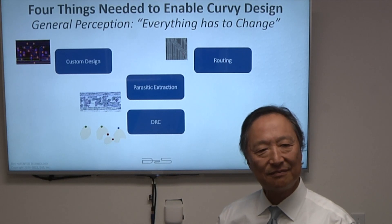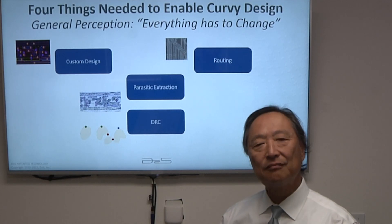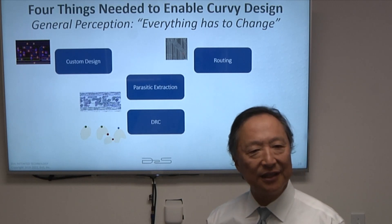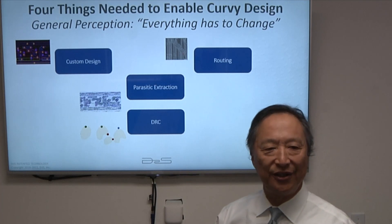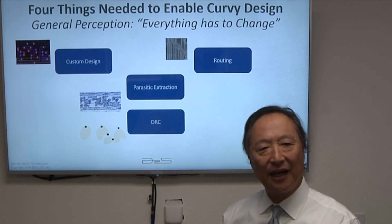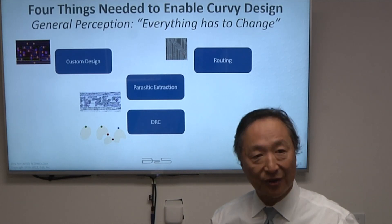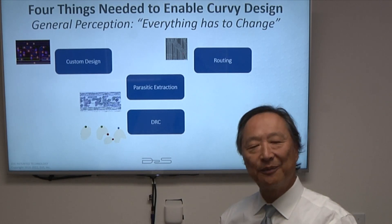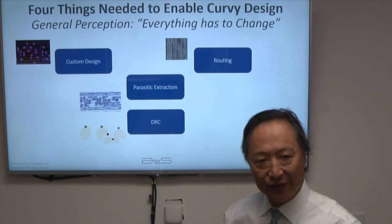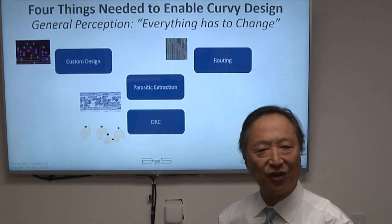Does AI fit in here as well — can you use machine learning to pull all these things together at a level you couldn't with existing tools? AI, particularly deep learning, is definitely applicable, and there are probably multiple places here that can benefit from it. There's a lot of deep learning being used in design automation already, and the overwhelming majority of those algorithms are probably directly transferable to curvilinear space without hardly any work.